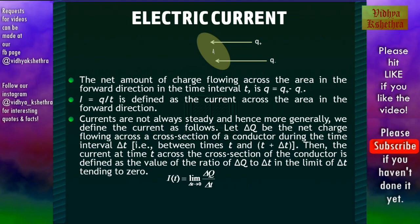That is I(T) = lim(ΔT→0) ΔQ/ΔT. The SI unit of current is ampere A.